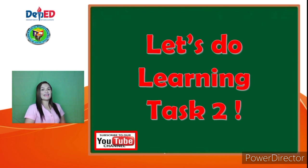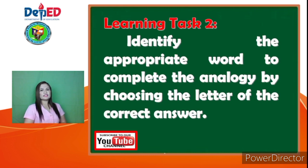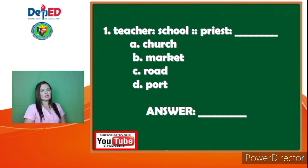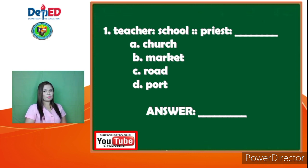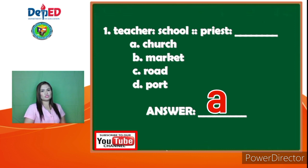Let's do Learning Task 2. In Learning Task 2, you're going to identify the appropriate word to complete the analogy by choosing the letter of the correct answer. Number 1: Teacher is to school as Chris is to — A. Church, B. Market, C. Road, D. Port. The answer is A, Church, because teacher is in the school and Chris is in church.